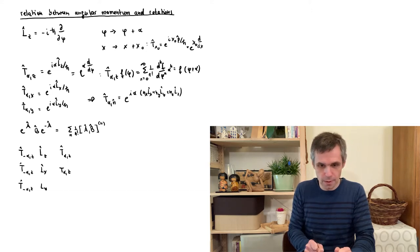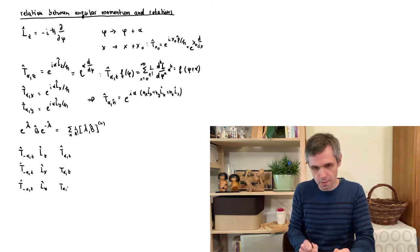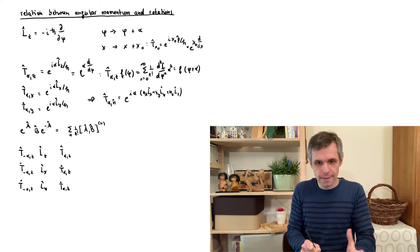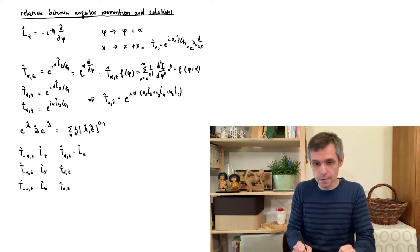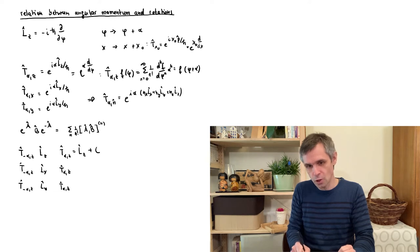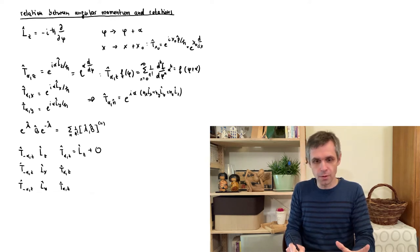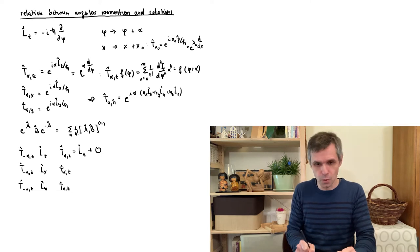What we really want to work out is the effect on all three components. The case of Lz is particularly simple: the first term just gives us Lz, and then we have the commutator of Lz with itself, so all remaining terms vanish. This rotation about the z-axis therefore does not change the z-component.